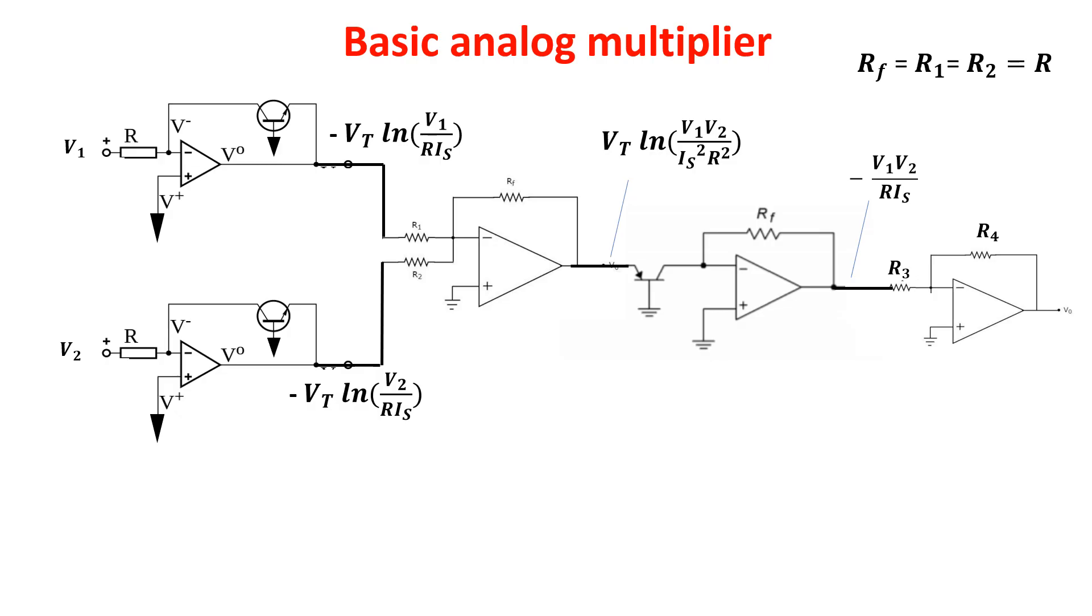So, we need a last inverting stage and the final output is this. In order to cancel out the constant factor, we make the ratio R3 over R4 equal to R times Is. In this way, we get the desired product.